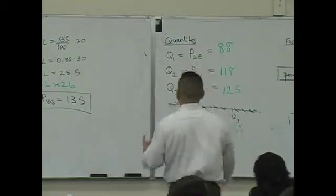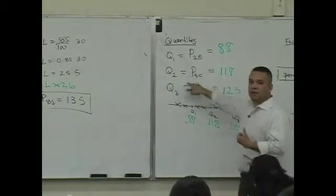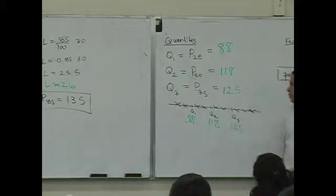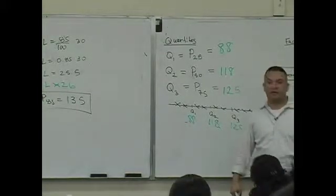That's what it's defined to be by definition. Third quartile is the 75th percentile. Second quartile is the 50th percentile. First quartile is the 25th percentile. So if you're above that third quartile,